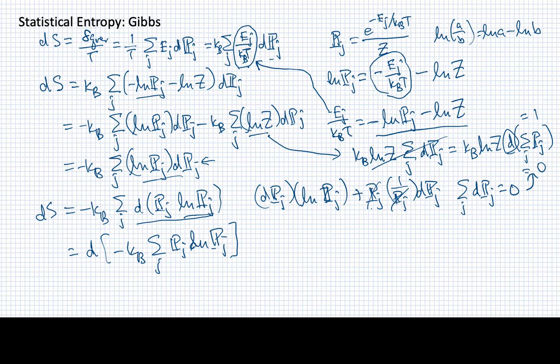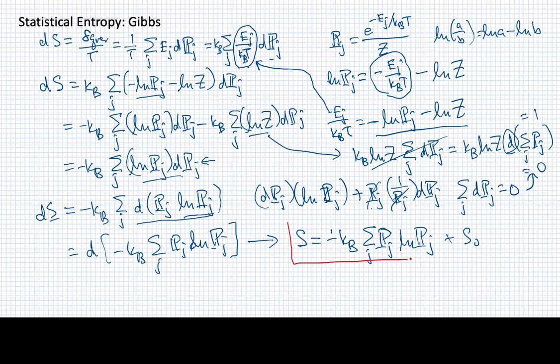So if I've got ds is equal to d of this, that implies, if I integrate this equation, because these are both exact differentials, that I can equate the entropy with minus kb times the sum over j of pj log pj. And there will be an integration constant, so I'll just write it out here, s0.